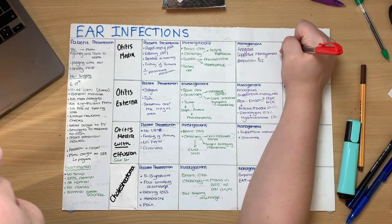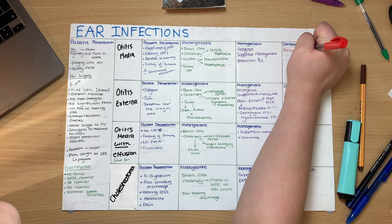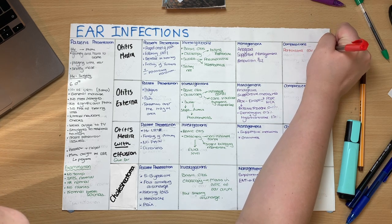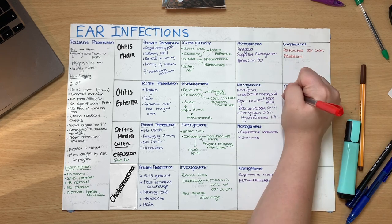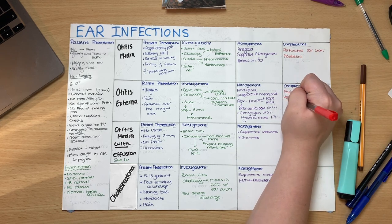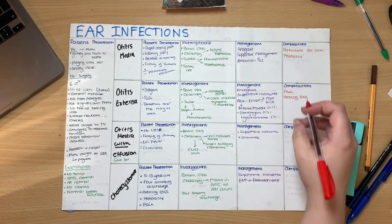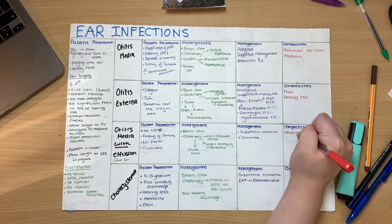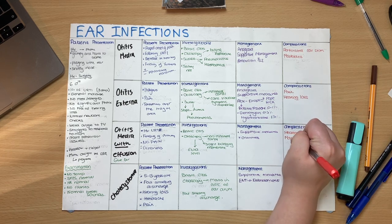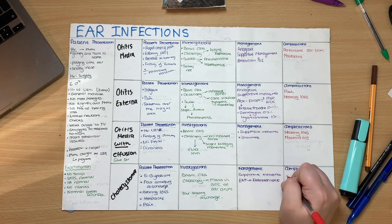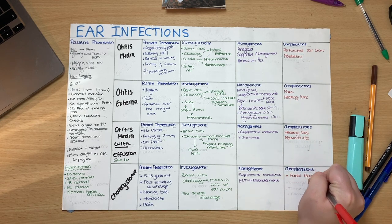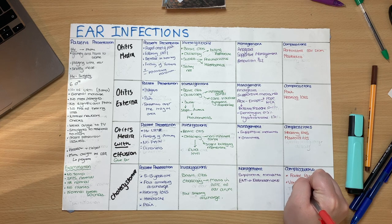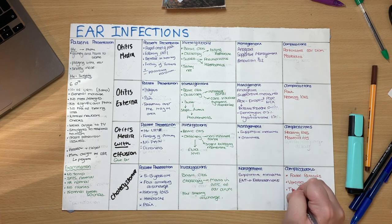Let's quickly consider complications. With the usual hearing loss and pain, there are also a couple of red flag symptoms to consider. One of these is mastoiditis — if the pain is worse on palpation of the skin behind the ear and the auricle protrudes forward, this is a high risk of mastoiditis. This is where the infection spreads from the middle ear to the bone behind the ear and can potentially travel into the brain.